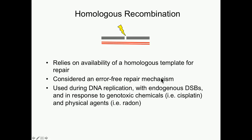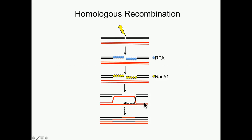Homologous recombination relies on a homologous template for repair, and is used to repair spontaneous breaks that can occur during DNA replication and in response to genotoxic chemicals or physical agents. After a double-strand break occurs, the DNA ends are resected and coated by the single-strand DNA binding protein RPA. Subsequently, RAD51 displaces RPA and forms filaments. This is a critical and central step of homologous recombination because RAD51 filaments are essential for the homology search and strand invasion steps, and so this step is very highly regulated.